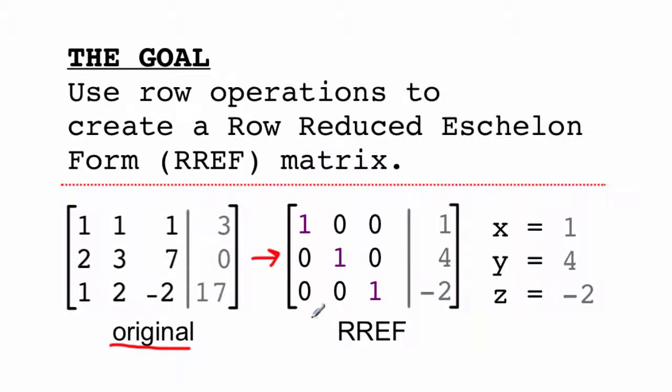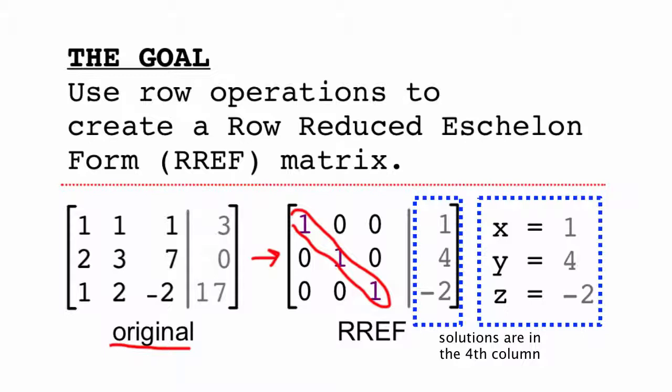Now, row-reduced echelon form, you'll notice, has these ones along the diagonal, and the rest are zeros. And what that gives us is the solution to a system of equations, where x equals 1, y equals 4, and z equals negative 2 for this particular example.